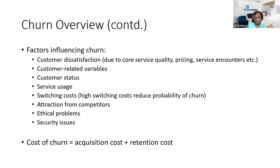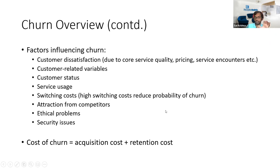Customer status is another factor — what sort of account they have with the company, how long they've been using it, and how much they pay. Then there's service usage: how often they use the subscription, what features they use. Switching costs are also important — the higher the cost of switching from one product or service to another, the lower the probability of churn. This could be due to a contract requiring a minimum usage period.